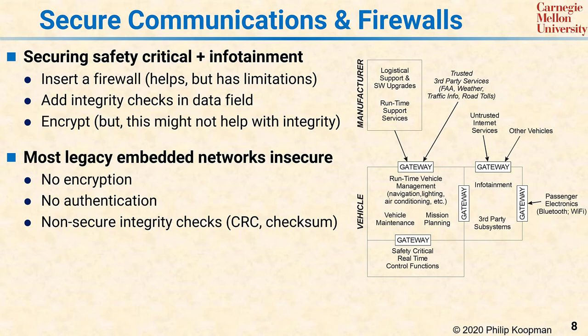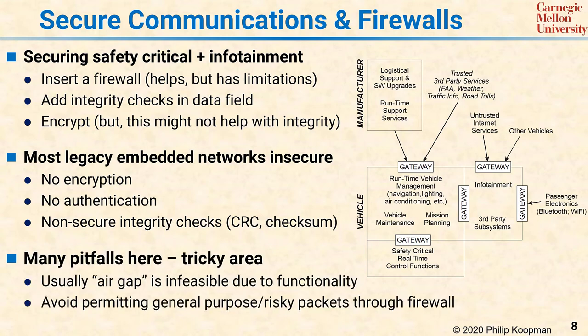Getting secure communications inside the bounds of an embedded system is a very tricky area. Ideally, you'd put an air gap in, meaning there's no actual wire connecting the system to anything else. But that's just infeasible because there's huge demand for internet-connected devices and improved functionality. A lot of the approaches involve putting in a firewall and rejecting risky packets. But over time, we're going to see pressure to actually change the communication protocols inside embedded systems to be more secure. This area has a lot further to go, and you'll be seeing continued research and pressure to improve security inside embedded systems over many coming years.